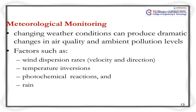Meteorological factors such as wind, temperature, photochemical reactions, and rain are media through which pollution can travel from source to recipients. Changing weather conditions can produce dramatic changes in air quality and ambient pollution levels. Key parameters include wind dispersion rates, velocity and direction, temperature inversion, photochemical reactions, and rain — all of which we need to monitor as part of air sampling.